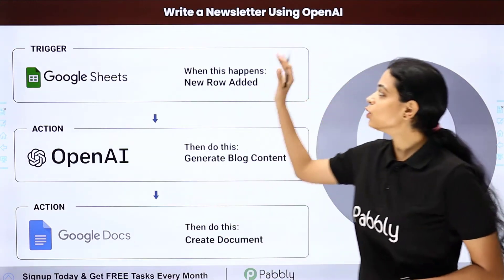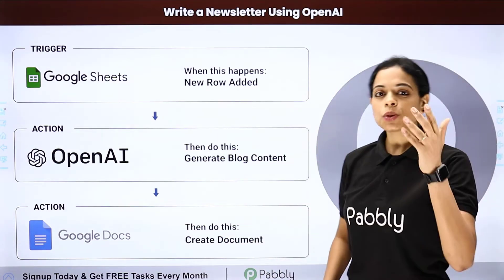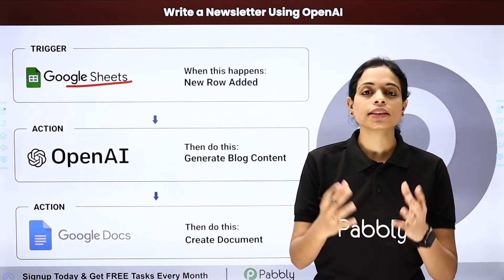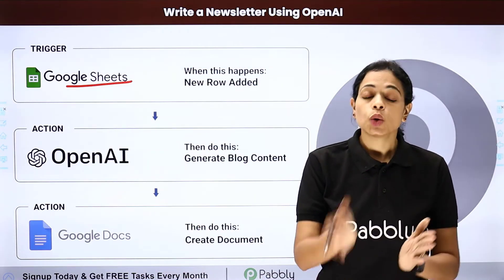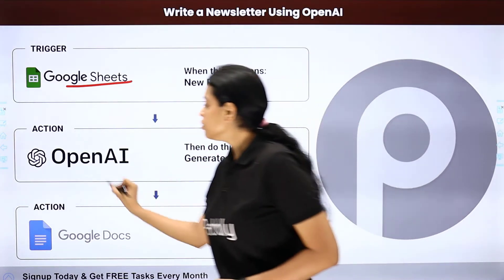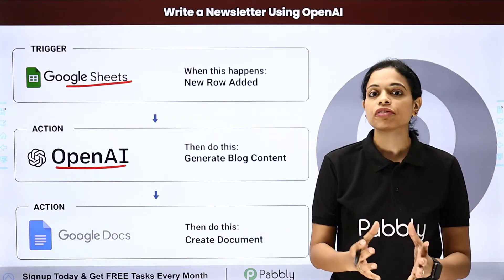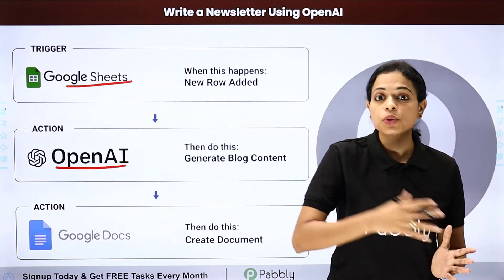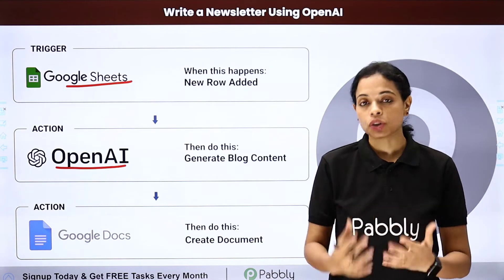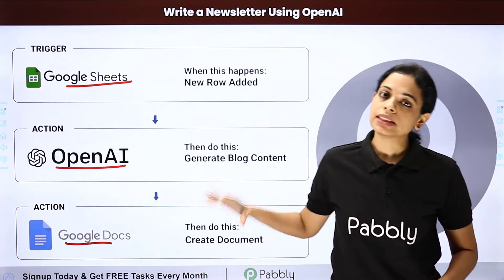In this video, we are going to see how to write a newsletter using OpenAI. Let's say that you are using Google Sheets and in this sheet you have got various titles. With these titles, you want to create a newsletter. And for this, you are using OpenAI, which is an artificial intelligence software that helps you to create content. And then you want to create a Google Docs document and save this data there.